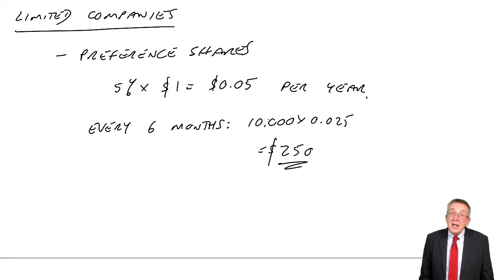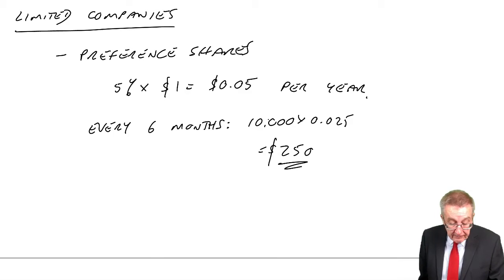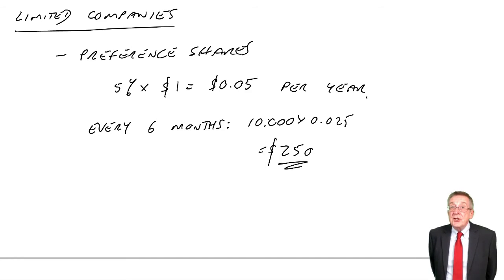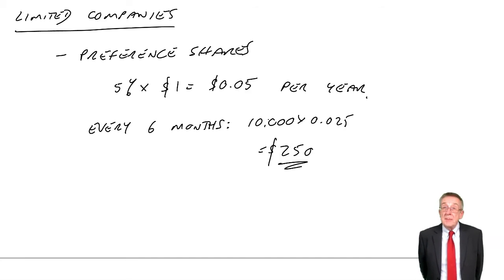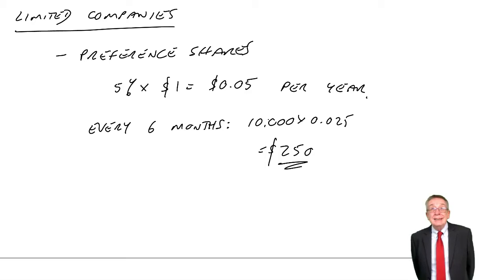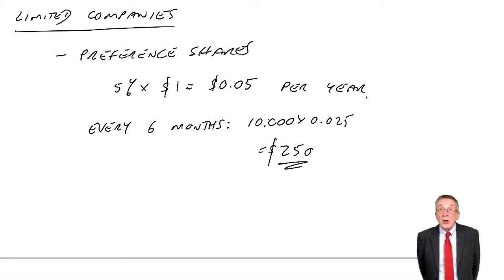So, redeemable are just like borrowing money. And so, read what I've written carefully, but they are shown as non-current liabilities in the statement of financial position. It's just like a loan. And the dividend payable each year is shown with the interest on the statement of profit or loss. It's just like interest on the loan.